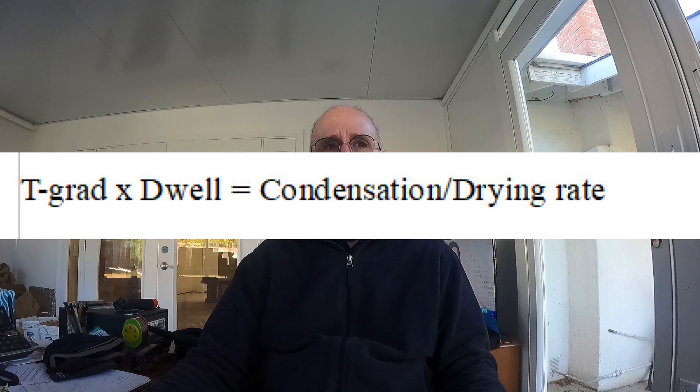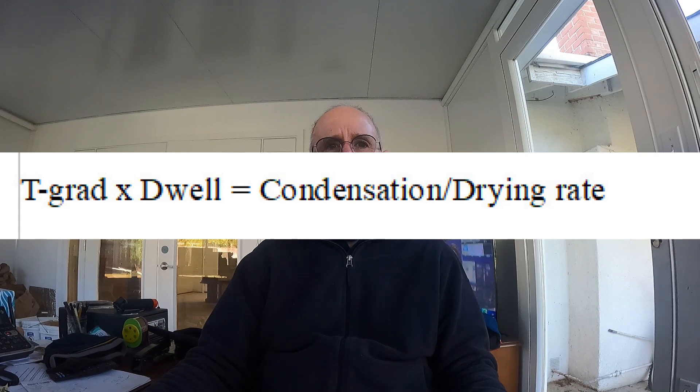We want to optimize both of these factors. The following is a simple logic equation for this relationship: the temperature gradient times the dwell results in a condensation drying rate. The PDP temp is very different from the atmospheric dew point temp. The higher the air pressure, the higher the PDP temp, which results in a faster condensation and drying rate.